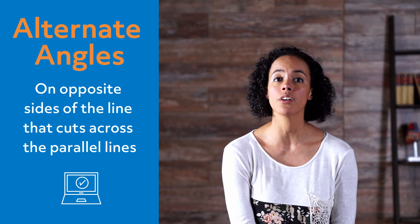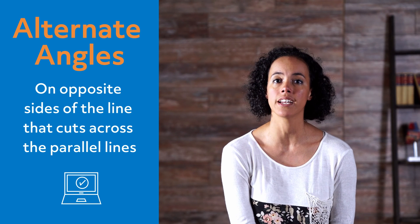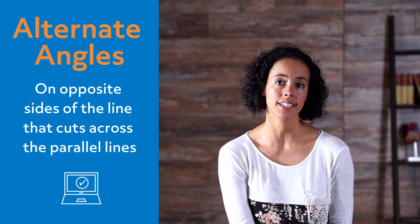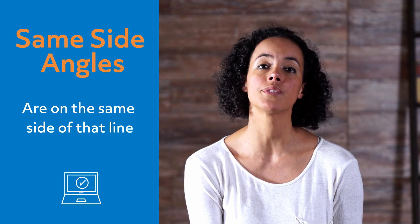Alternate angles are angles that are on opposite sides of the line that cuts across the parallel lines. And same-side angles are angles that are on the same side of that line, of course. In questions about the two groups of angles, this is used to combine interior or exterior with alternate or same-side angles.